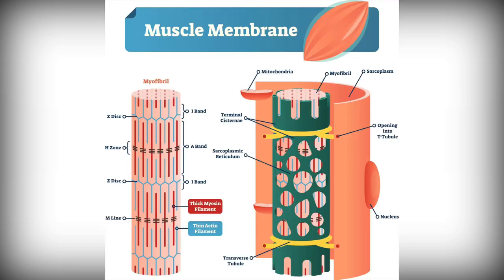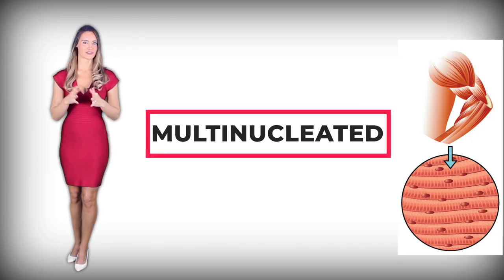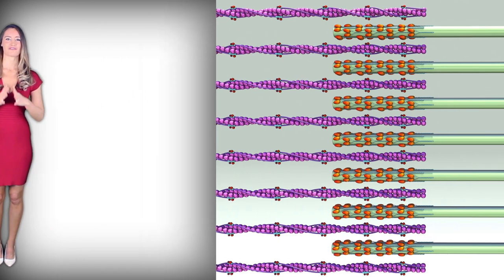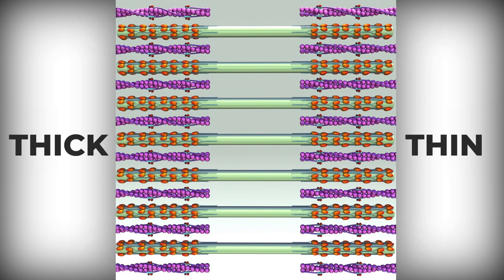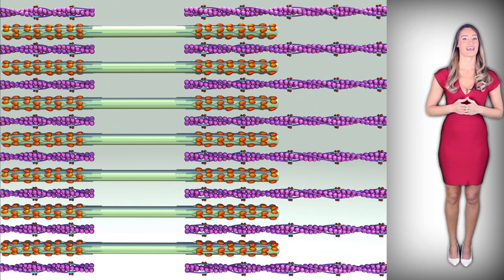The most notable thing found in the sarcoplasm is the myofibrils — cylindrical protein structures that run from one end of the fiber to the other. There can be hundreds to thousands of myofibrils in each cell, packing the inside so tightly that they squish the organelles and push the nucleus close to the sarcolemma, which is why skeletal muscles appear multinucleated. The myofibrils occupy almost 80% of the muscle fiber and are contractile elements because they contain myofilaments. These myofilaments are enveloped in units called sarcomeres, which are separated by a dense material called Z-lines. Myofilaments can be thick or thin: thick myofilaments contain myosin, while thin myofilaments contain the protein actin — and these two proteins make muscle contraction possible.